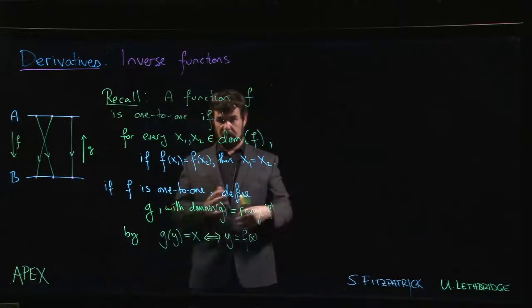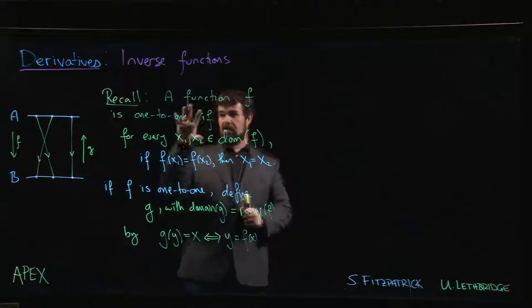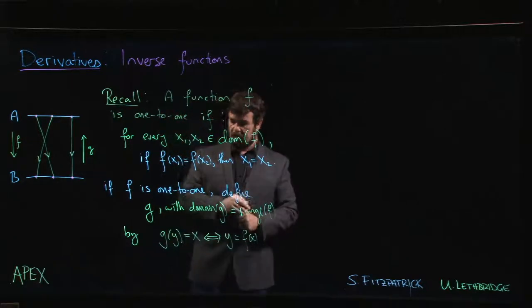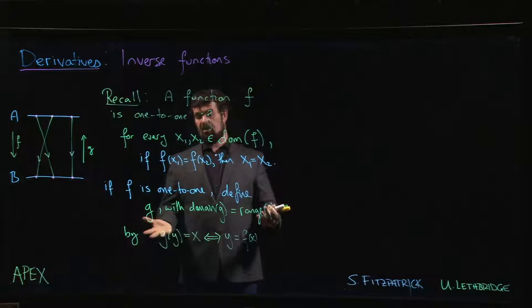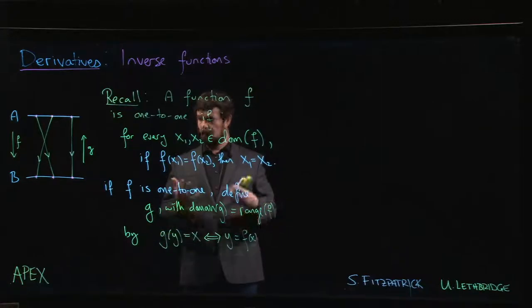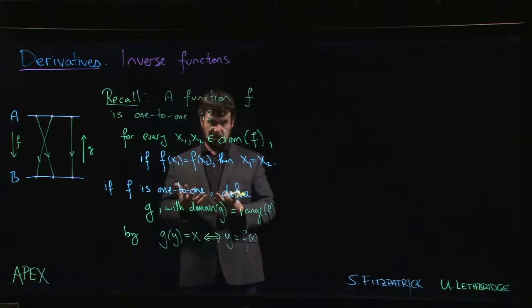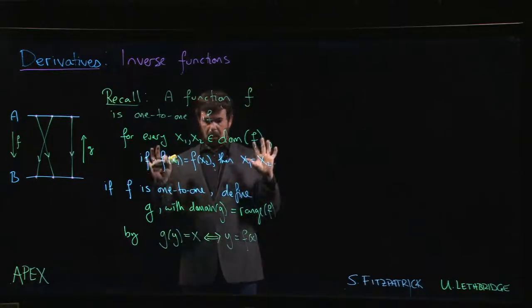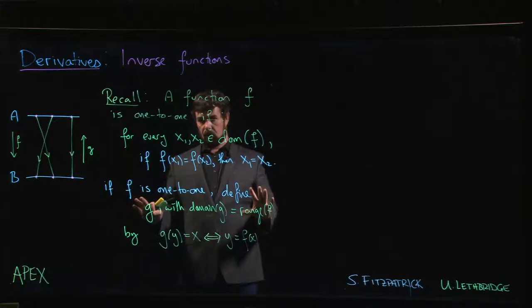So one-to-one guarantees that this inverse—reversing all the arrows is essentially what you're doing when you define an inverse. If the function you start with is one-to-one then you know that the function you get when you reverse the arrows is in fact a function.